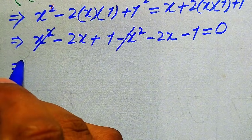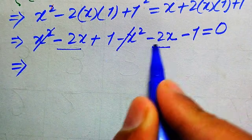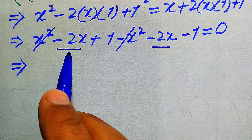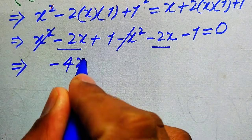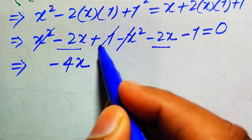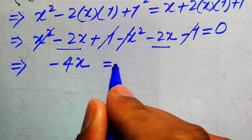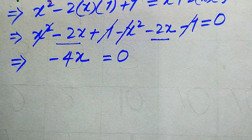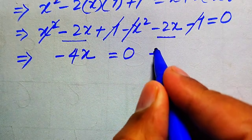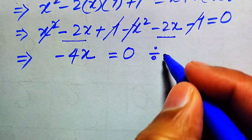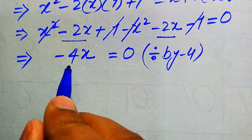The positive and negative like terms cancel out. Combining -2x and -2x gives -4x, so the equation becomes -4x = 0. To find x, we divide both sides by -4.